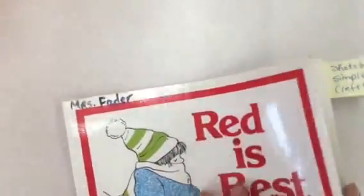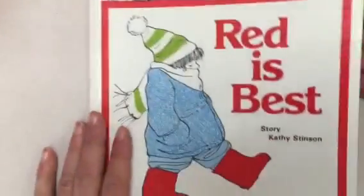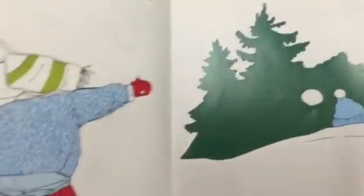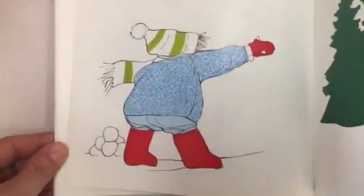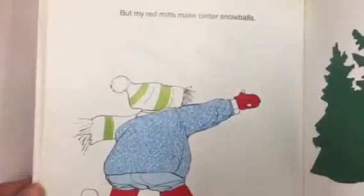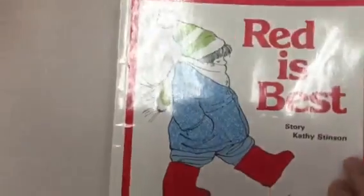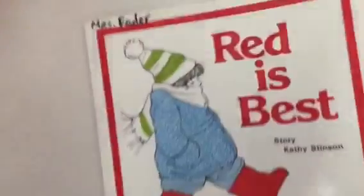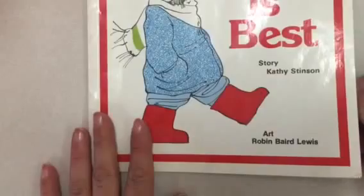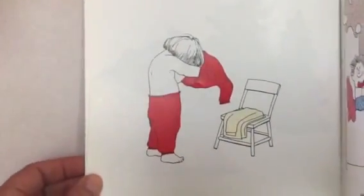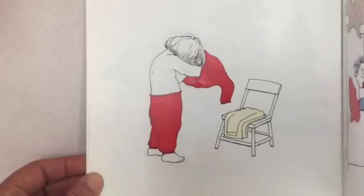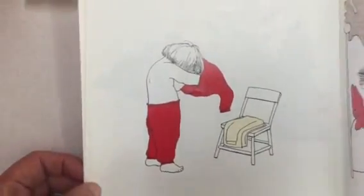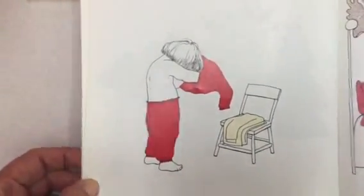Here's another example of very simple illustrations where very little color is added as well. This book is Red is Best by Kathy Stinson, and the illustrator is Robin Baird Lewis. You can see how it's just very simple — maybe three colors are used on each page.